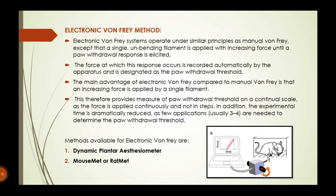The electronic Von Frey method operates on the same basis as Von Frey principles, except that a single unbending filament is applied with increasing force until a paw withdrawal response is elicited. As seen in the picture, the filament is applied through a device rather than manually. The main advantage is automation, which results in fewer errors. Increasing force is applied to a single filament.